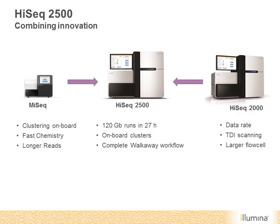The HiSeq 2500 combines innovation from both the MiSeq platform and the HiSeq 2000. From the MiSeq, we have integrated onboard clustering, fast chemistry, and longer reads. From the HiSeq 2000, the major innovation was the much faster scanning rate. These two things together allow us to achieve 120 gigabases of data in 27 hours with a complete walk-away workflow.